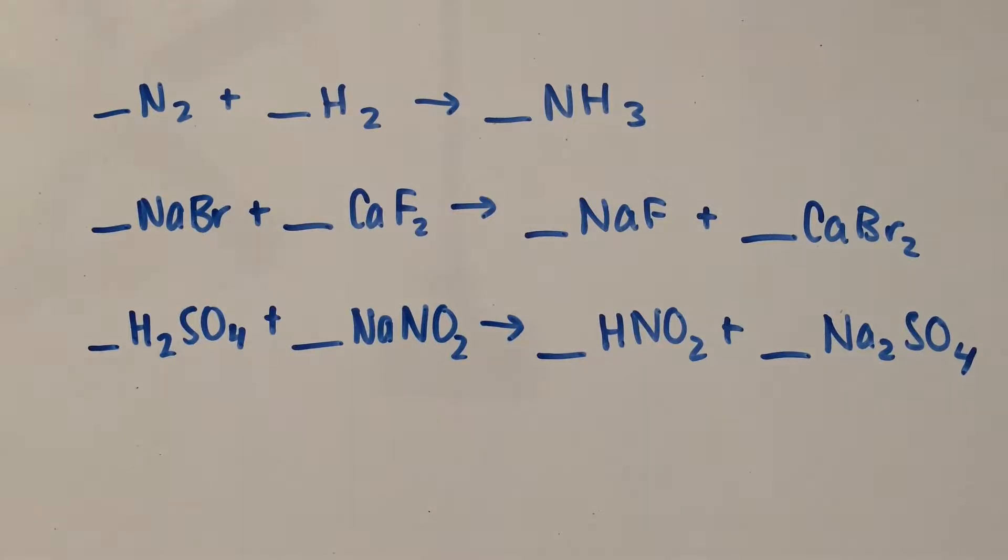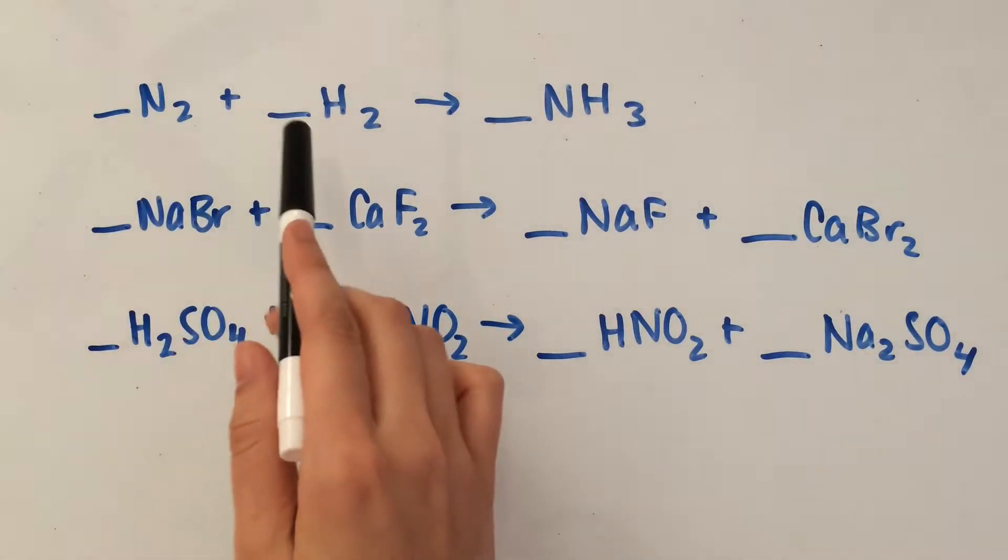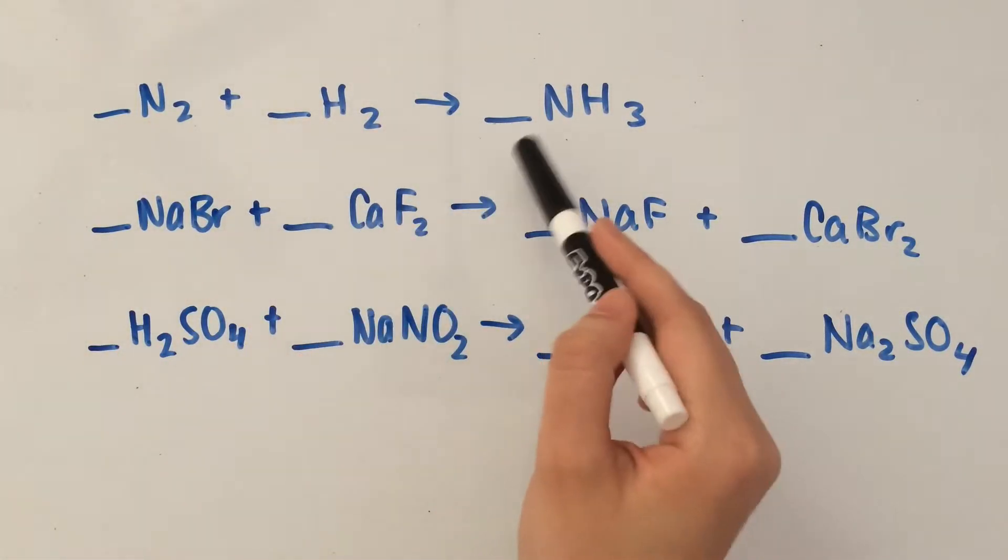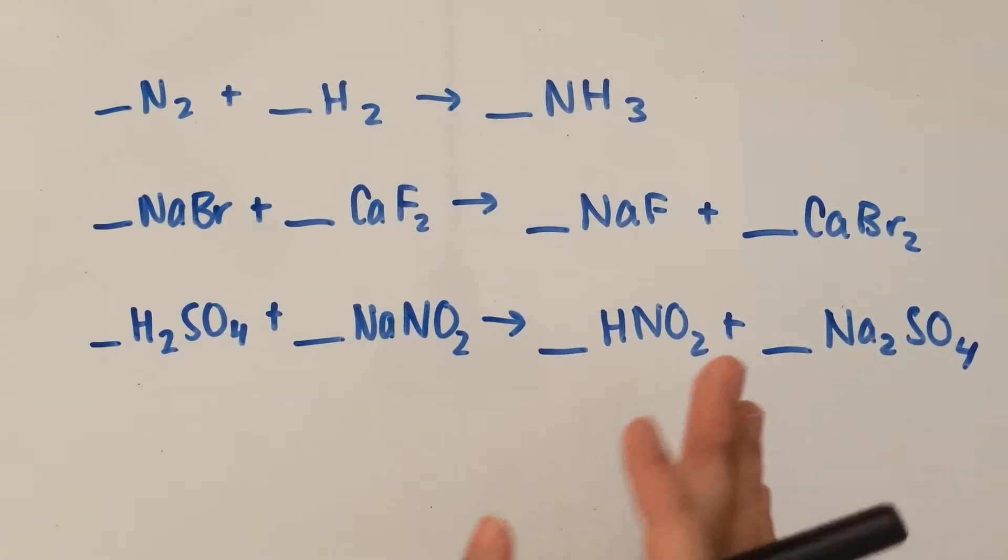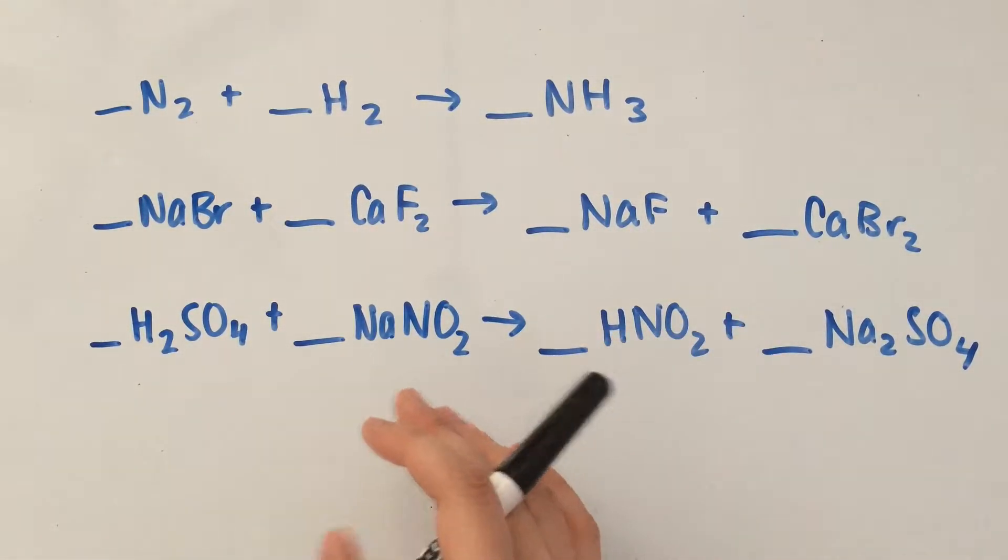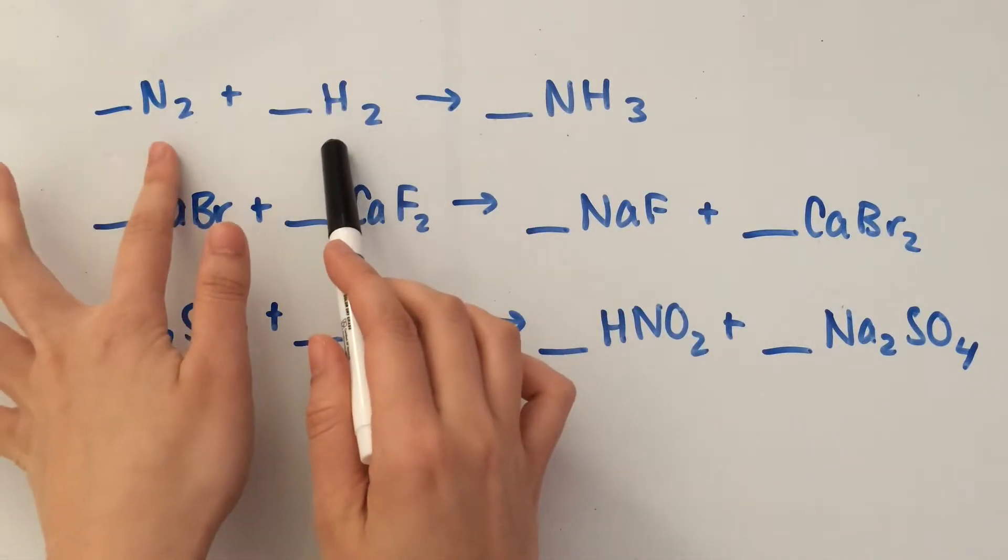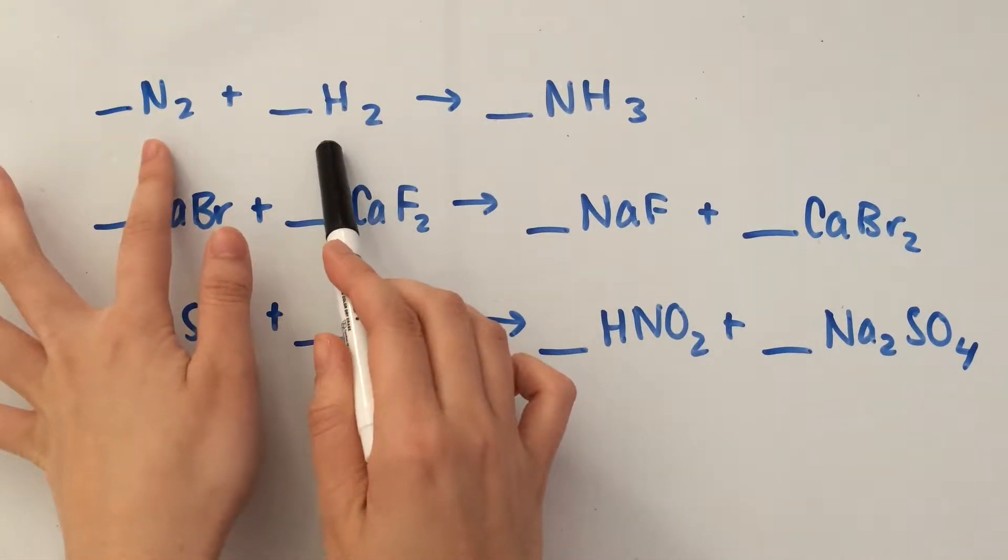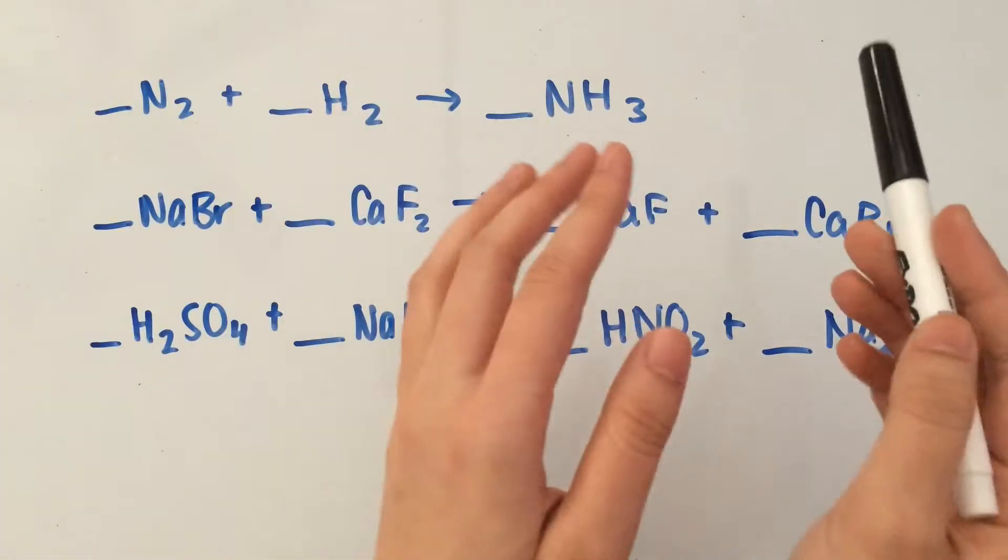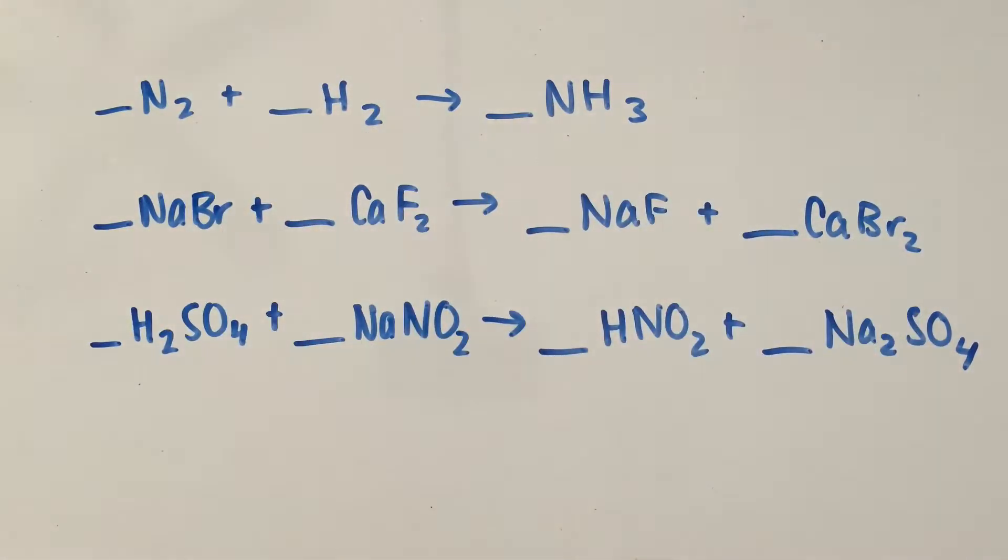I have three chemical equations here that I need to balance today. The first one is blank N2 plus blank H2 yields blank NH3. The first thing we need to do is make sure that the amounts of the elements on one side of the reaction are the same as the amounts on the other side.